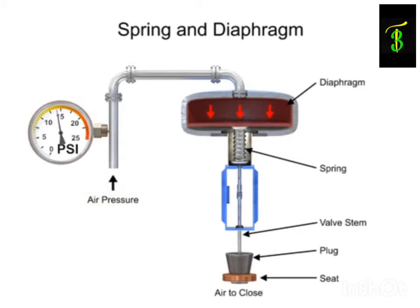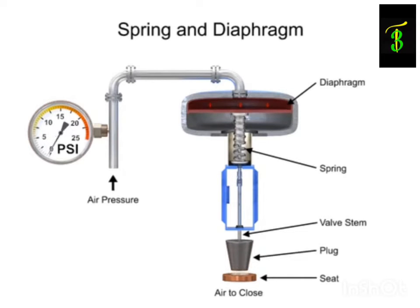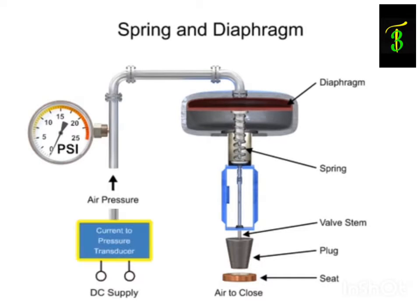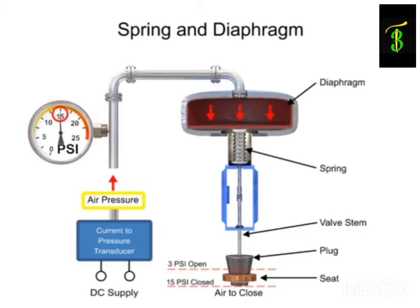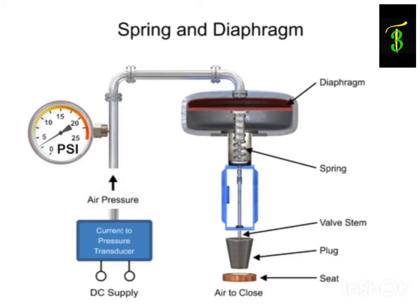With no air pressure, the restrictor is pushed upward by the spring to act as a normally open control valve. To vary the position of the restrictor and flow through the valve, a current to pressure transducer can be used to provide a 3 to 15 psi signal to the diaphragm. At 3 psi the valve is maintained open and at 15 psi the valve is maintained closed. Pressures between the 3 to 15 psi range proportionally change the flow of the valve.